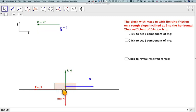So here we have a block on a rough, and rough means that there's friction, slope inclined to the horizontal. At the moment, theta is set to zero.